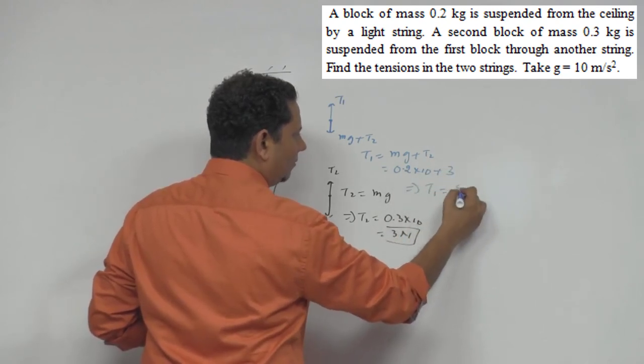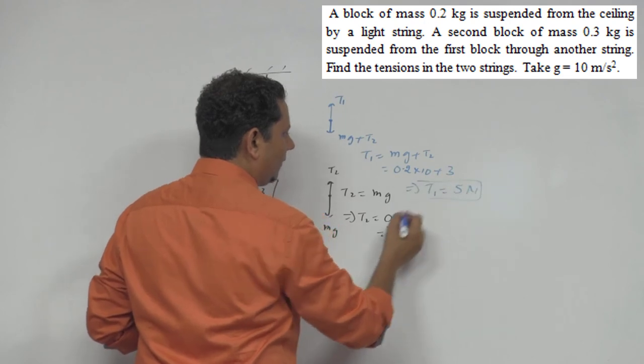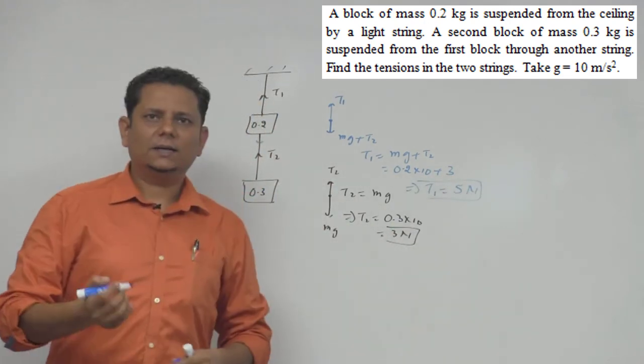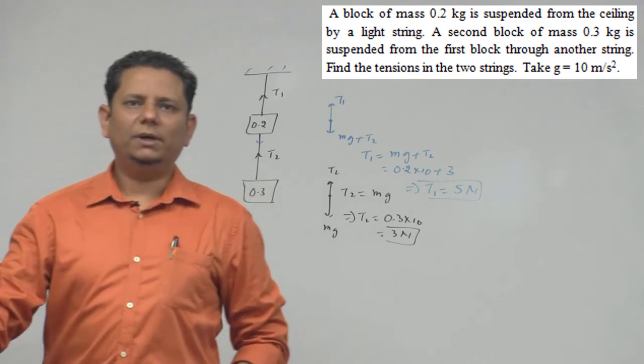So, which implies आपका T1 will be equal to 5 N. So, आपकी 2 values हो जाएंगे. So, this tension is 5 N and this is आपकी 3 N. So, they will be our final answers.